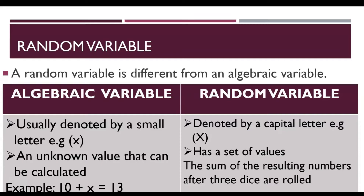Solving it algebraically, we know that x is equal to 3. Therefore, this variable is an algebraic variable. For the random variable, a random variable has a set of values. For example, the sum of the resulting numbers after 3 dice are rolled. When you roll 3 dice and add the results, you can get a lot of possible outcomes. So, random variables have a set of values.